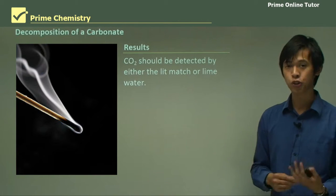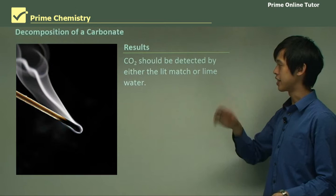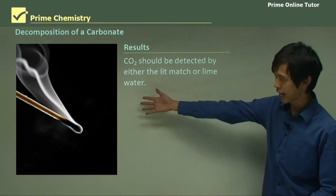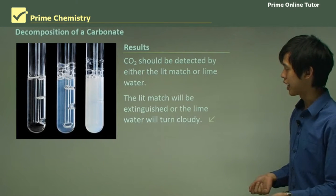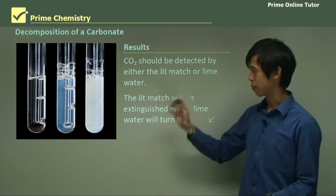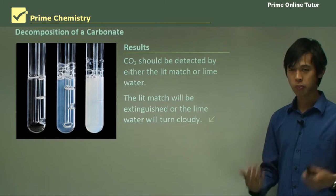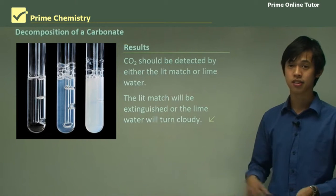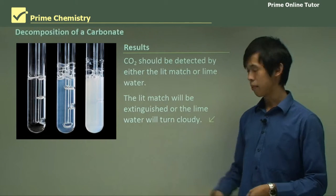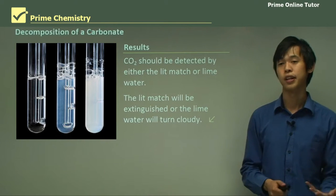So the results, what you should see. So CO2 should be detected by either the lit match or the lime water. So in this case, the lit match will go out. And in the lime water case, the lime water will turn from clear to cloudy. And we'll talk about in the question segment, we'll be talking about what the reactions are actually happening in this process. But for now, we just need to know that if it goes from clear to cloudy, we've got carbon dioxide available.